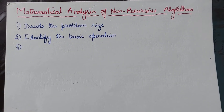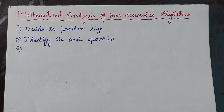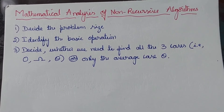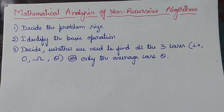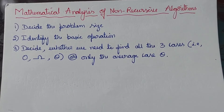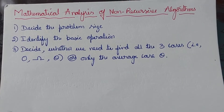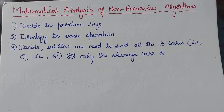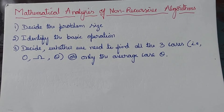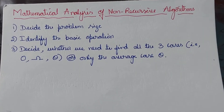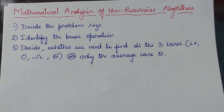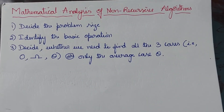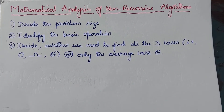The third step is to decide whether we need to find all three cases — worst case, average case, and best case — or whether we need to find only the average case (Big Theta). We need to decide whether to find all three cases separately or only the average case.